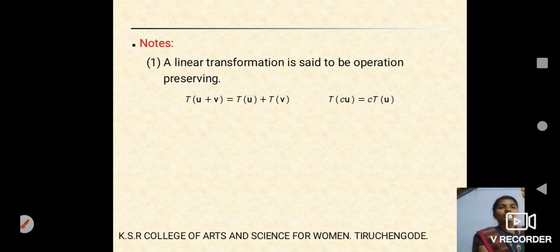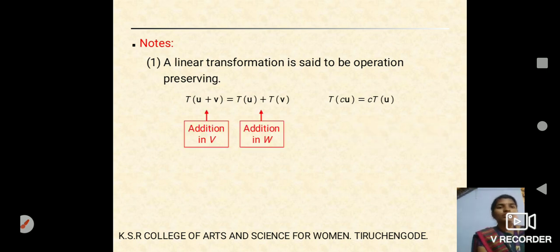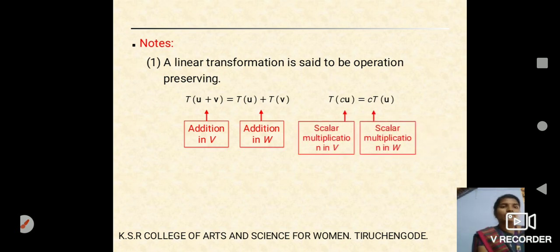Note on linear transformation: in the first condition T(U + V) = T(U) + T(V), on the left side U + V is the addition in domain V, and on the right side the terms are addition in co-domain W. Similarly for scalar multiplication: the left side is scalar multiplication in domain V and the right side is scalar multiplication in co-domain W.